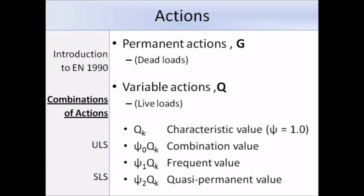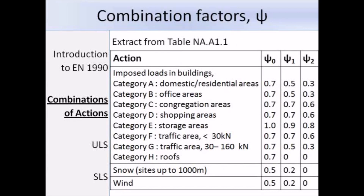You'll notice these psi factors — on the next slide I'll show you where you can get those. These psi terms are combination factors, and we can get them from the UK National Annex. In this slide, I have an extract from table NA.A1.1 from the National Annex, showing the different psi factors for different loading situations. Where there's higher loading, the combination factors are slightly larger. For category A — domestic and residential areas — ψ0 is 0.7, ψ1 is 0.5, and ψ2 is 0.3.